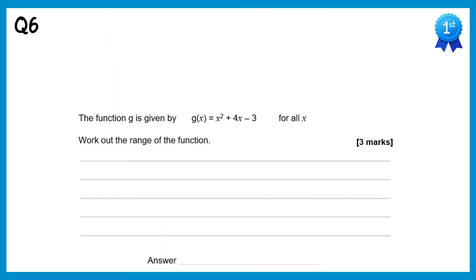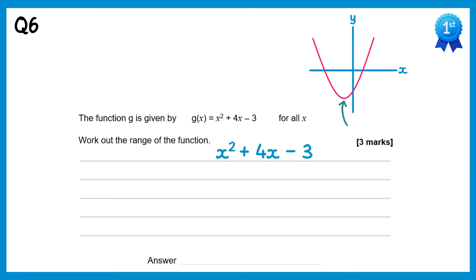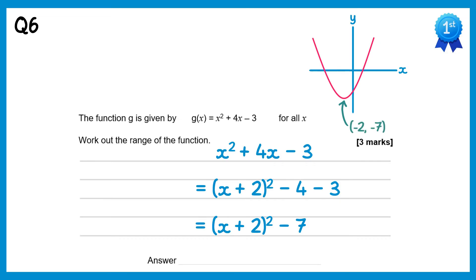For this function g(x), we have a quadratic graph. Since the domain is all x, we need to find the lowest point of the graph by completing the square. The function can be written as x plus 2 all squared minus 4 minus 3, which simplifies to x plus 2 all squared minus 7. The vertex has coordinates negative 2, negative 7, so the lowest possible y value is negative 7. The range of the function is g(x) greater than or equal to negative 7.